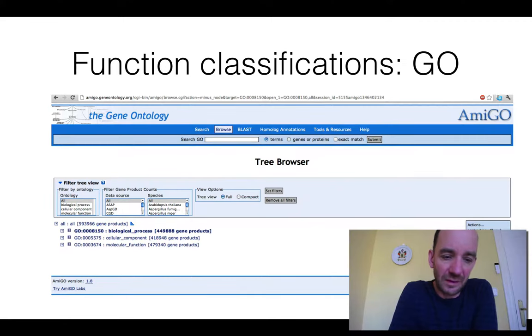Functions are divided into three groups: biological processes, cellular component, and molecular function. This is not a function of an organism or a cell, but the actual function of individual genes.